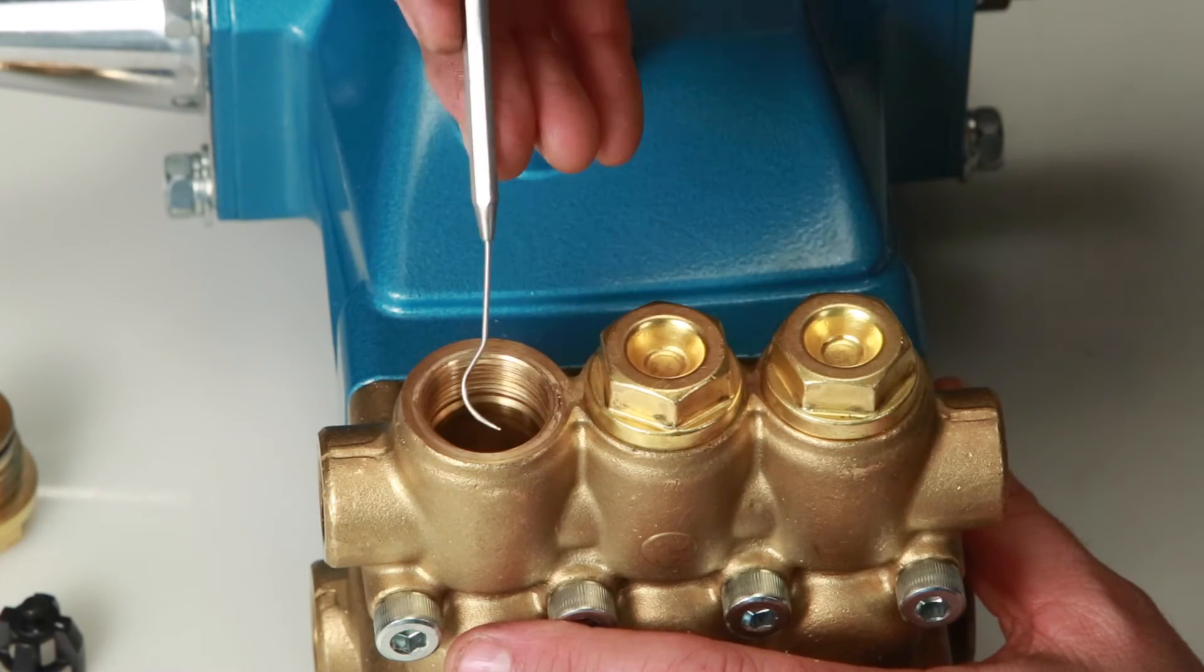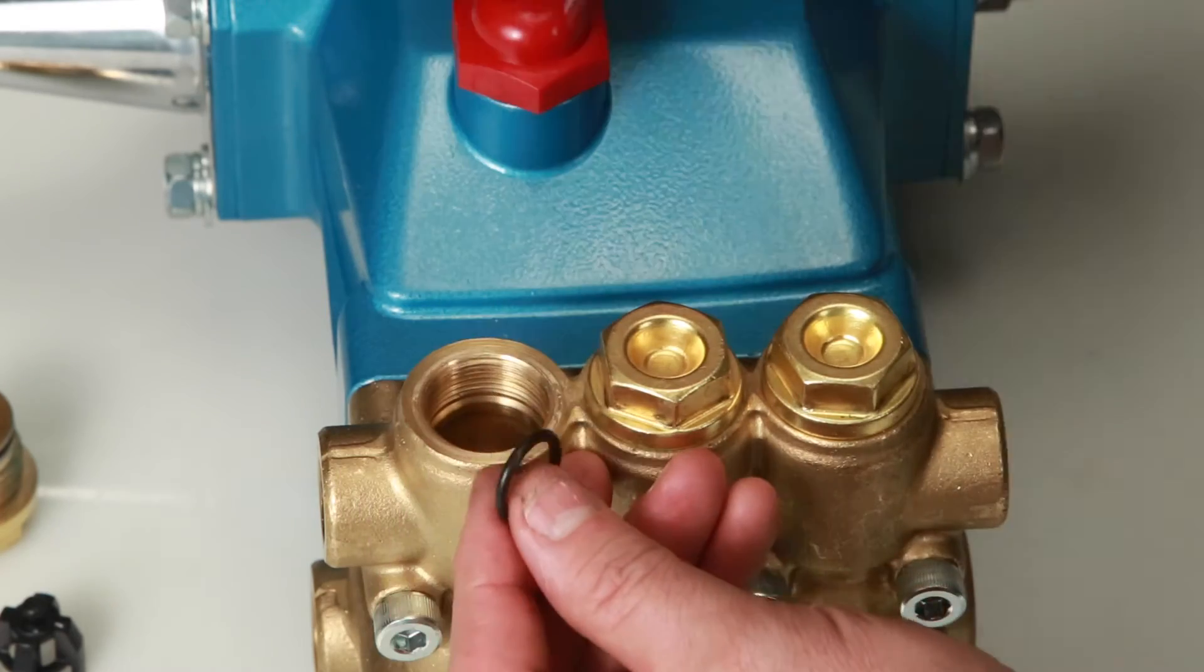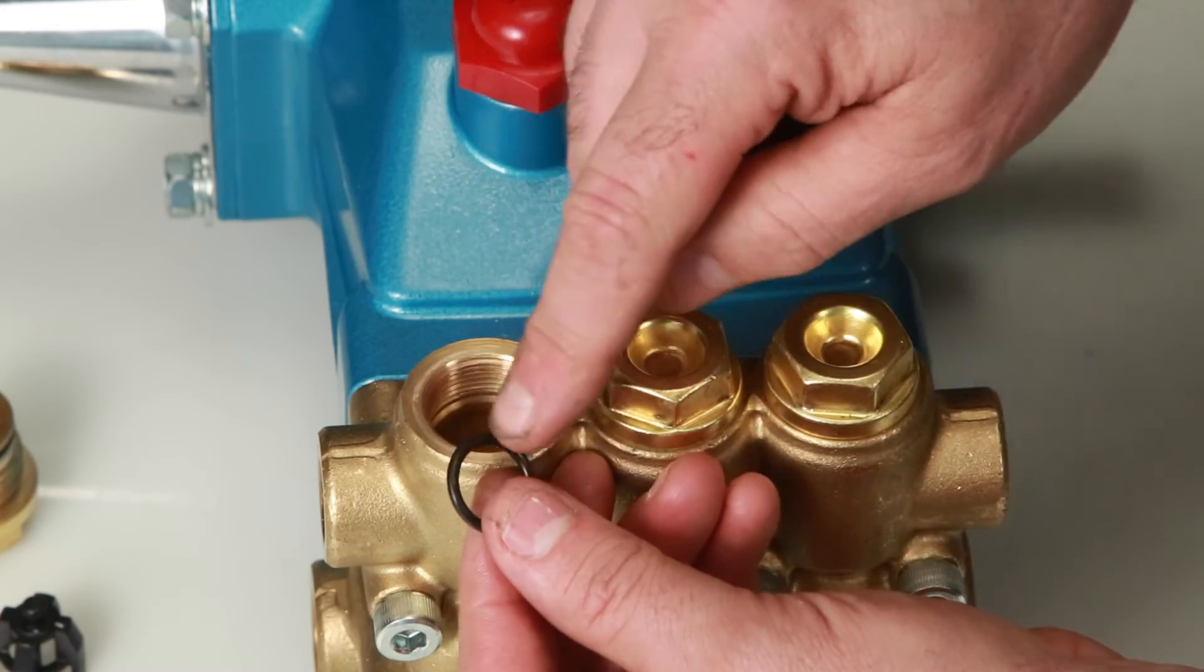Remove the O-ring from the manifold using a small screwdriver or pick. Inspect for cuts or nicks.